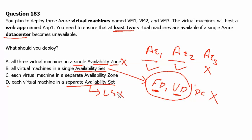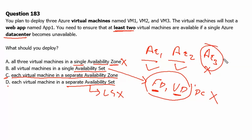Therefore option B is the incorrect answer. Option D — each virtual machine in a separate availability set — is also incorrect, because availability sets are a logical grouping of virtual machines in the same data center, so all virtual machines would go down when the data center goes down. Therefore, option C — each virtual machine in a separate availability zone — is the correct answer, ensuring that if one availability zone goes down, the remaining two availability zones are available because their data centers are separate.